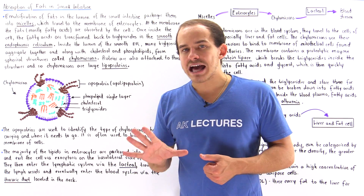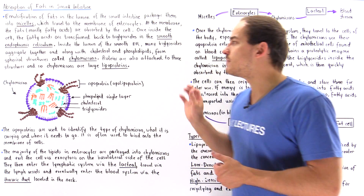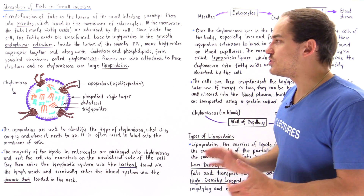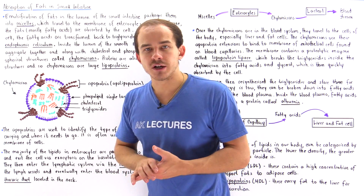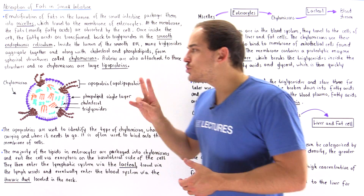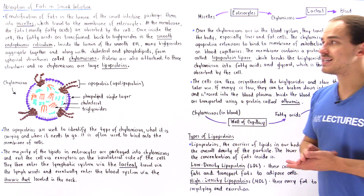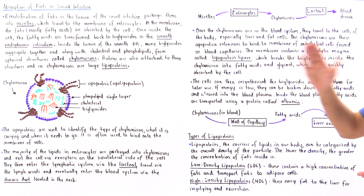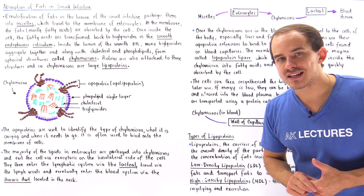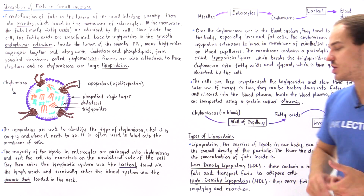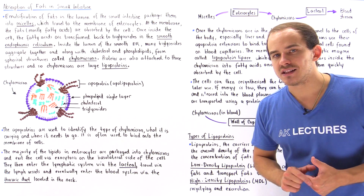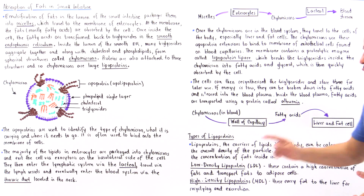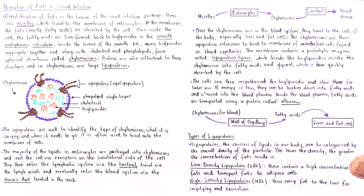There are five different categories of lipoproteins. One of them is the chylomicron. Two other important categories are the low-density lipoprotein (LDL) and the high-density lipoprotein (HDL).